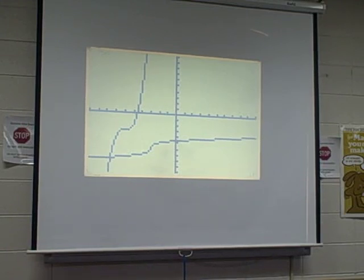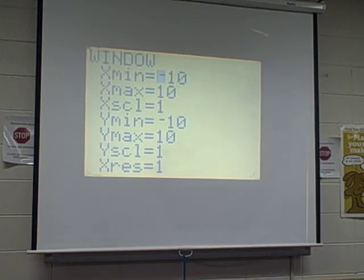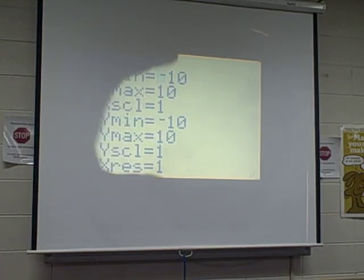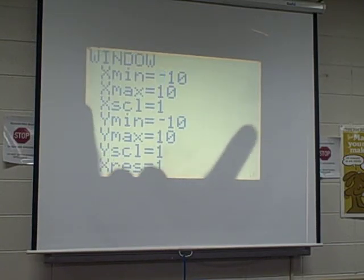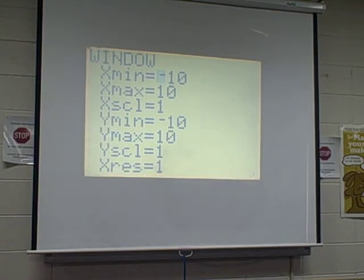Now again, if you want to adjust your window, because this thing doesn't quite look like it, we're compressing 10 units down this way on the graph, as opposed to the 10 units this way, because of the dimensions of the screen. So I will take my Ymin and I'll change it to negative 7, take my Ymax and make it 7, that kind of stretches out the up and down a little bit.